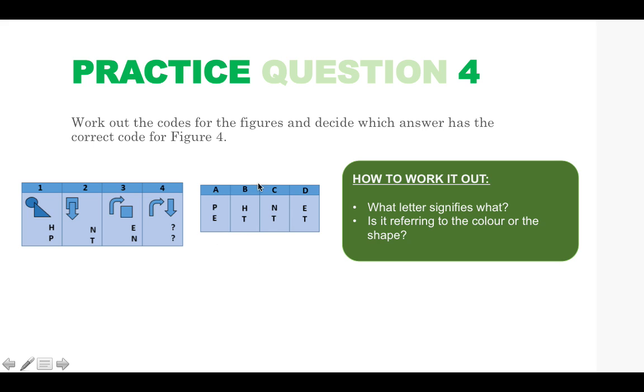So again we can rule out A, B and C and our answer is D because you know that this shape here is being signified by the letter E. And again you can work out what the other one signified just to double check your answer.